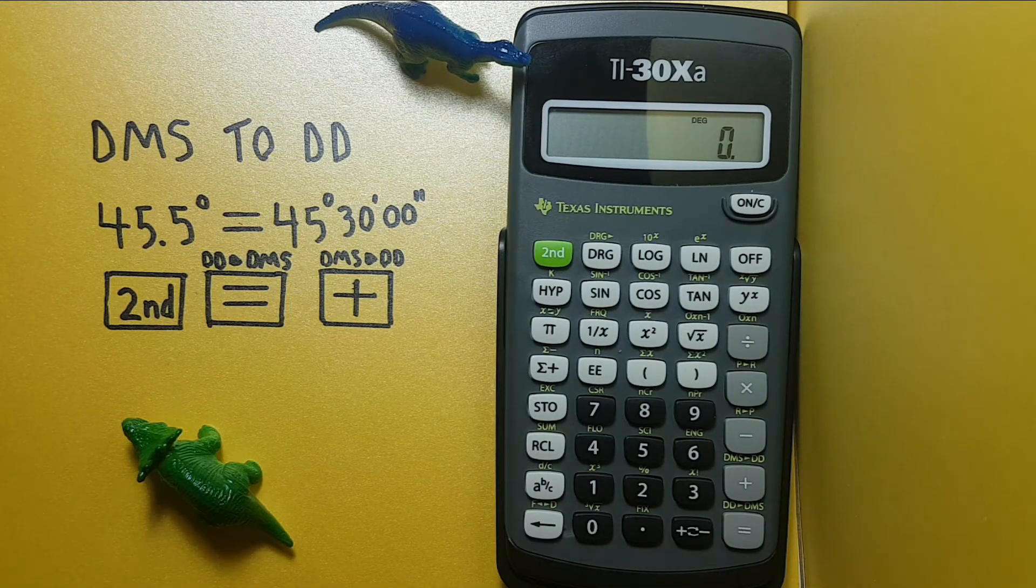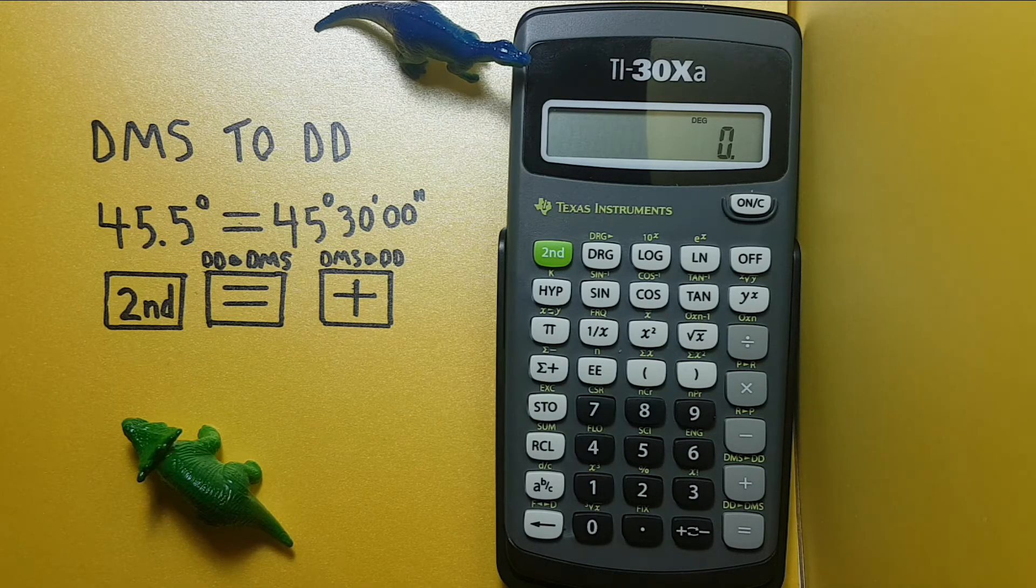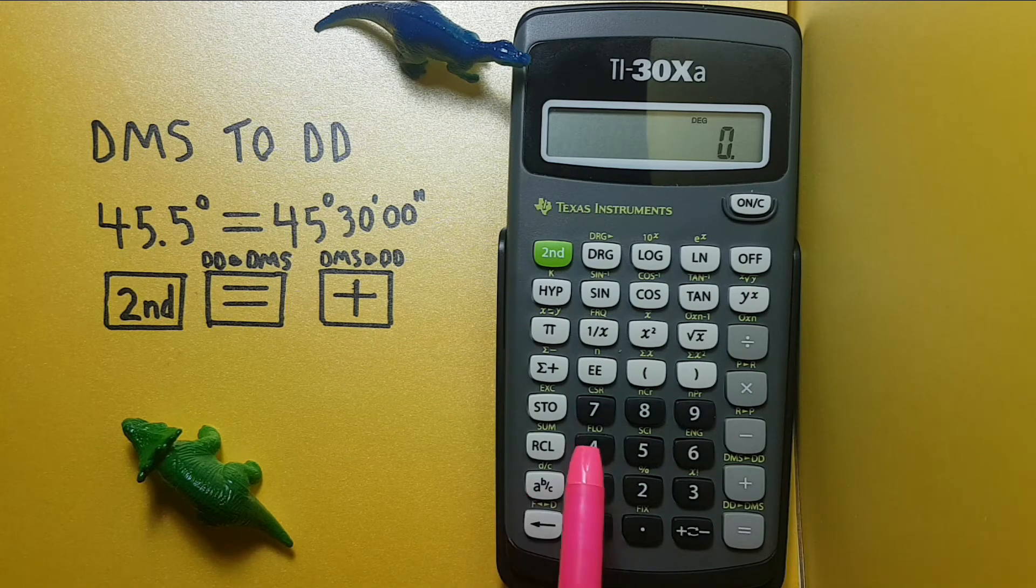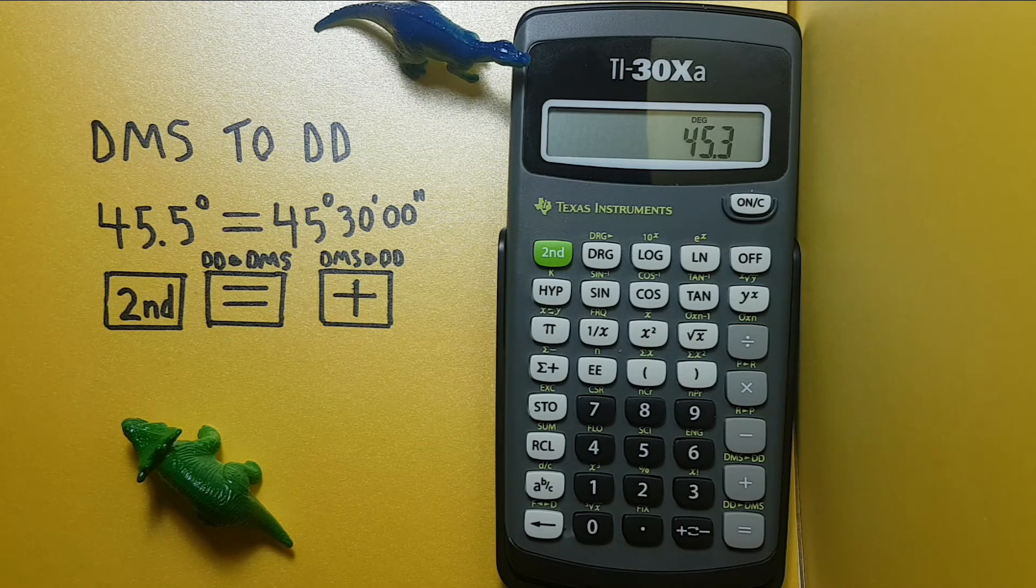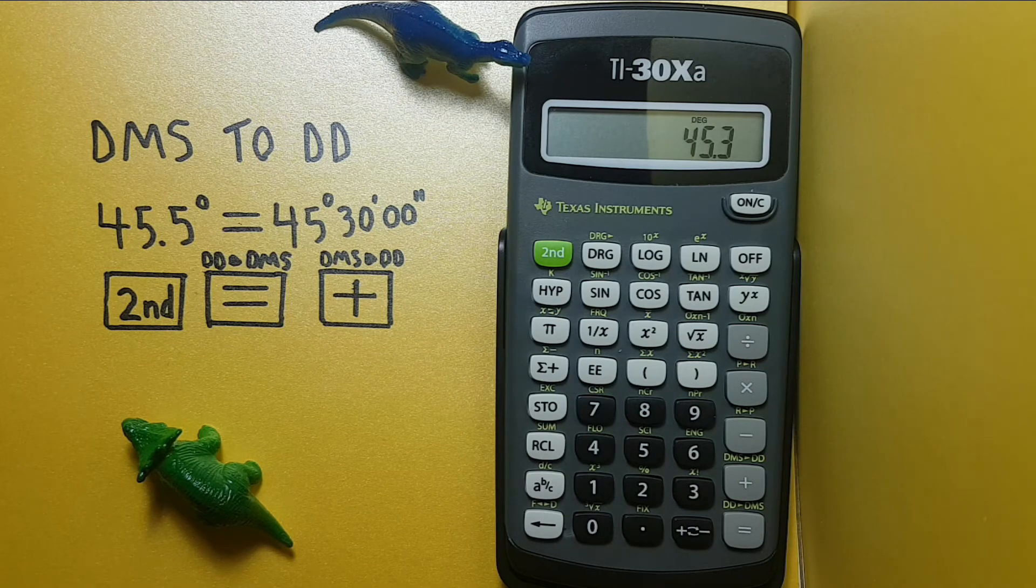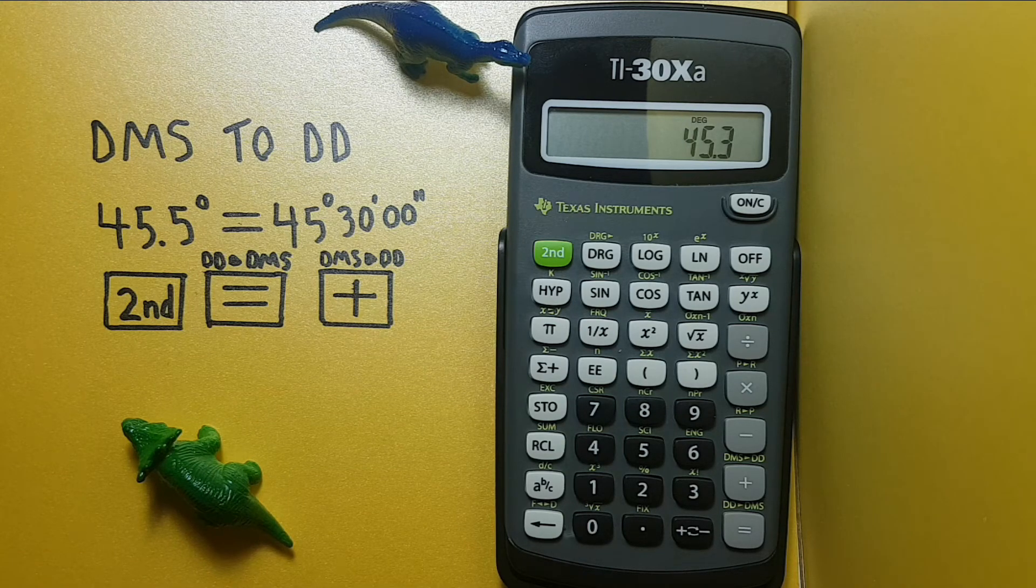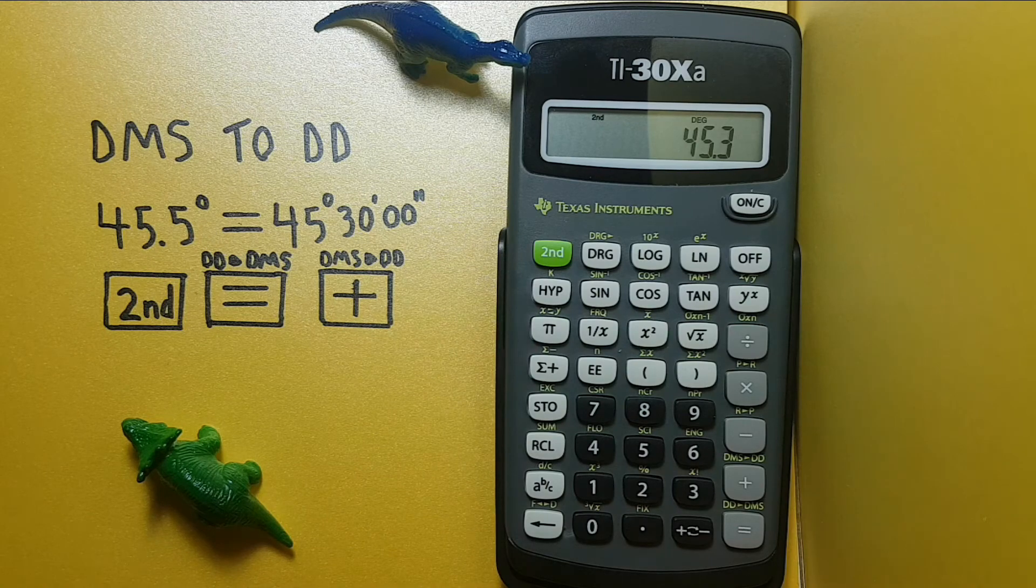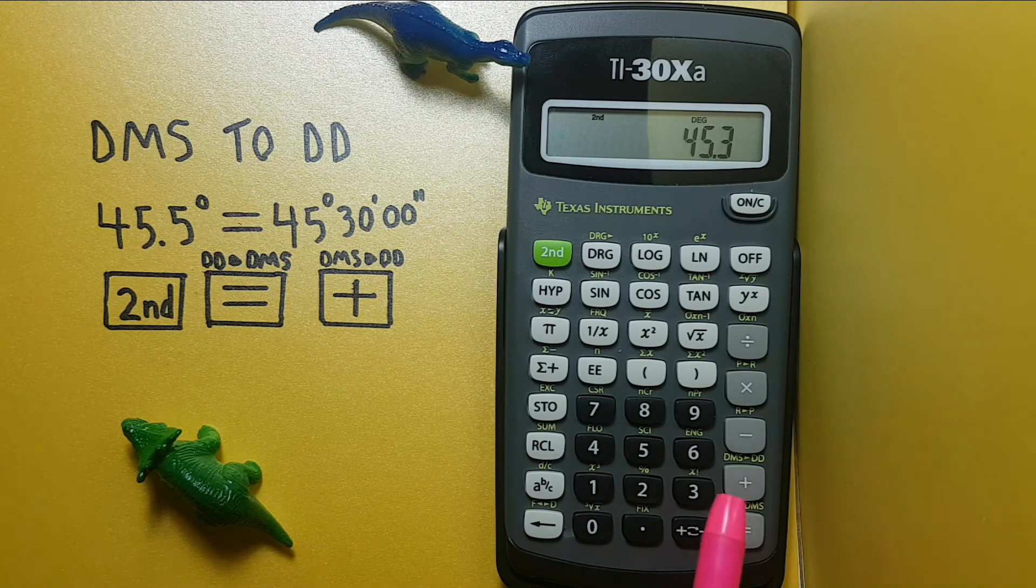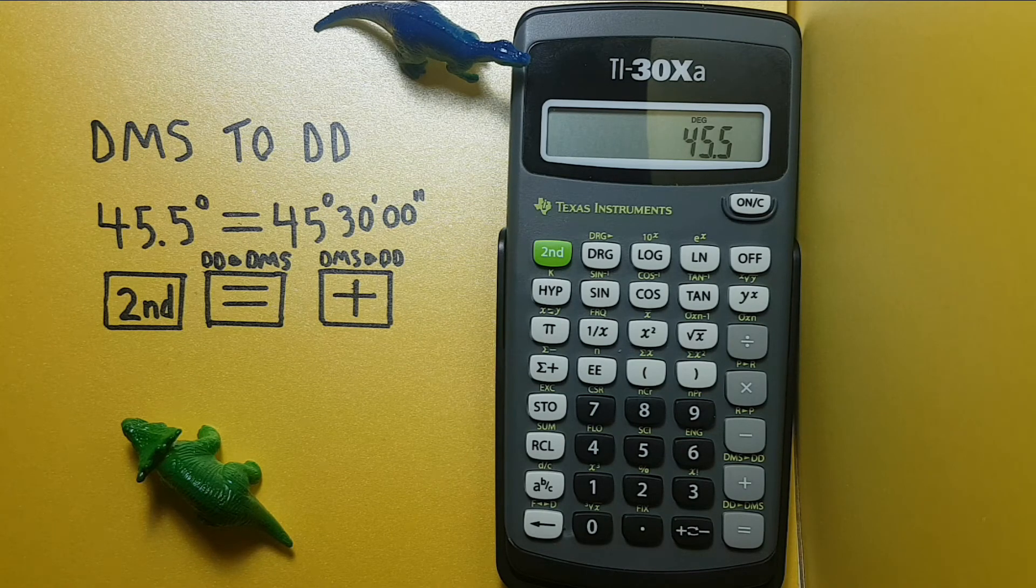All right, now let's say we start out with 45 degrees and 30 minutes. To enter this, we would type 45.3. This will symbolize our 45 degrees, 30 minutes. If we want to convert it to decimal degrees, we would then hit second function and then the plus key. And we see we now have 45.5 decimal degrees.